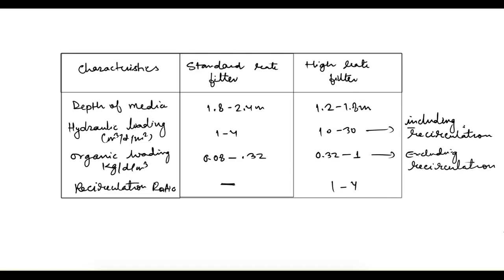In this video we will see example problems related to trickling filter design. First, let's look at some design data comparing standard rate and high rate filters. The depth of media is between 1.8 to 2.4 meters for standard rate filters, and 1.2 to 1.8 meters for high rate filters. So in case of high rate filters, we can take a smaller depth of media.